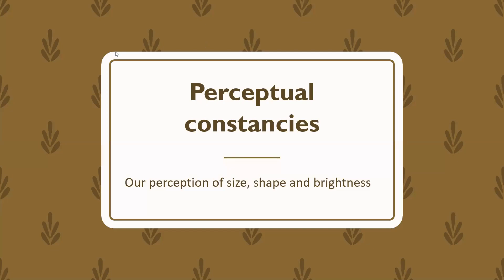Today we are covering the rest of the visual perception chapter, which is basically looking at perceptual constancies and then looking at how taste perception works. That's basically what we're doing today, and it's kind of like a repetition or related to what we've covered in the previous class.